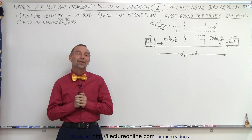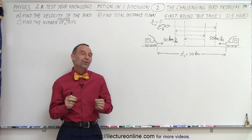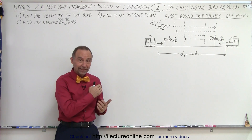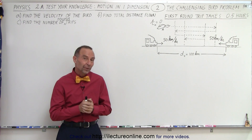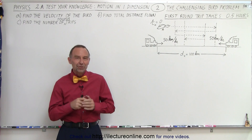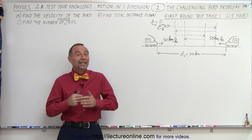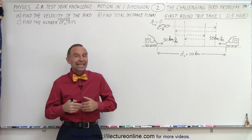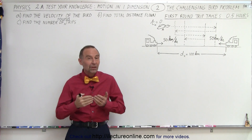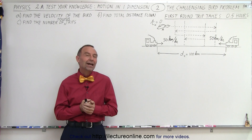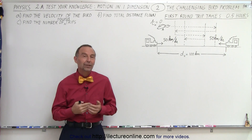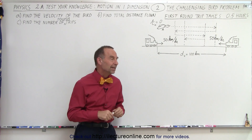Welcome to White Lecter Online. So either you're able to figure it out and you're eager to see if you did it correctly and want to see our solution, or you just couldn't figure it out and you're dying to know how to do it. Well, either way, here's the solution to part A and part B. First of all, how fast did the bird fly and what was the total distance covered by the bird by the time the trains meet?